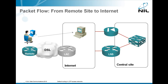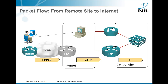Now, if a remote user wants to connect to a web server, the remote site's router sends a PPPoE packet to the LAC where it's converted to an L2TP packet and sent to the LNS. There, the L2TP and PPP envelopes are stripped and we are left with an IP packet, which has to go through the central site and through the firewall so that the remote site is protected from direct internet access.